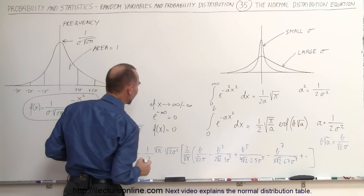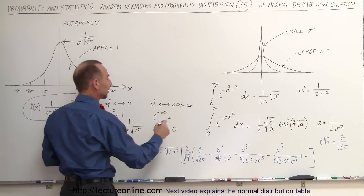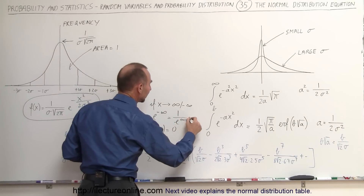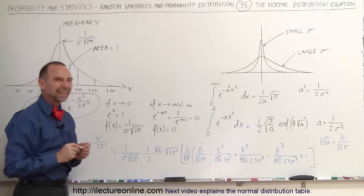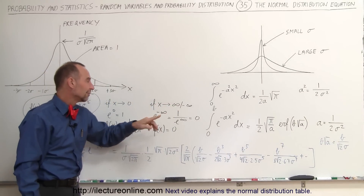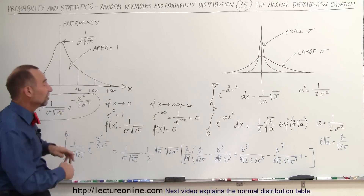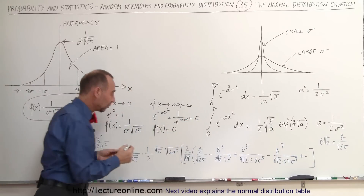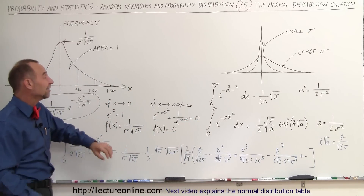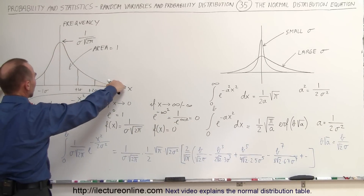I had a problem on the board, so I need to correct it: e to the minus infinity is equal to 1 over e to the infinity, and 1 over a very large number is equal to 0. So if x becomes a very large positive or negative number, e to the minus x squared — which becomes e to the minus infinity — goes to 0. Infinity squared is essentially the same as infinity; it's undefined. Therefore the function goes to 0, which is why you can see the function drops off in both directions.